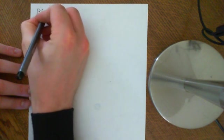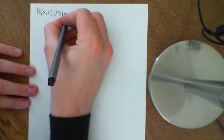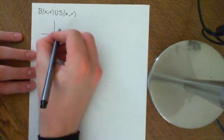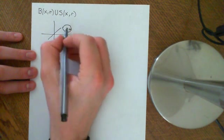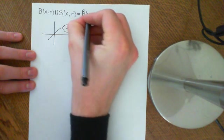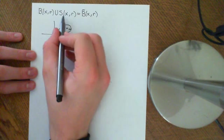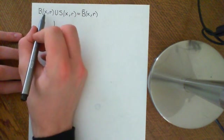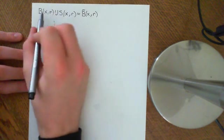An identity that holds in any metric space is that if you union together the open ball around a point x of radius r, and the sphere around centre x with radius r, you get the closed ball at centre x of radius r. In R³: the open ball is all the points within the dashed boundary, the sphere is all the points at exactly the boundary, and together their union gives the closed ball — all the points less than or equal to distance r from x.